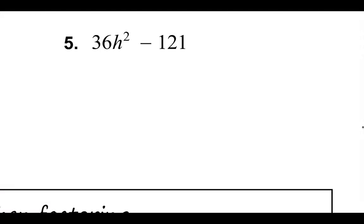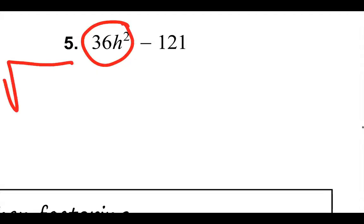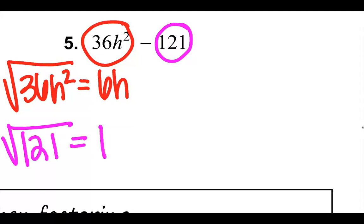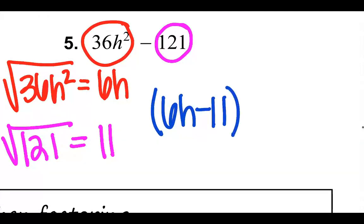The next one — do the same thing. Take the square root of 36h squared. Square root of 36 is 6, and square root of h squared is h. Then square root of 121 — 11 times 11 gives me 121. So the answer is 6h minus 11 times 6h plus 11.